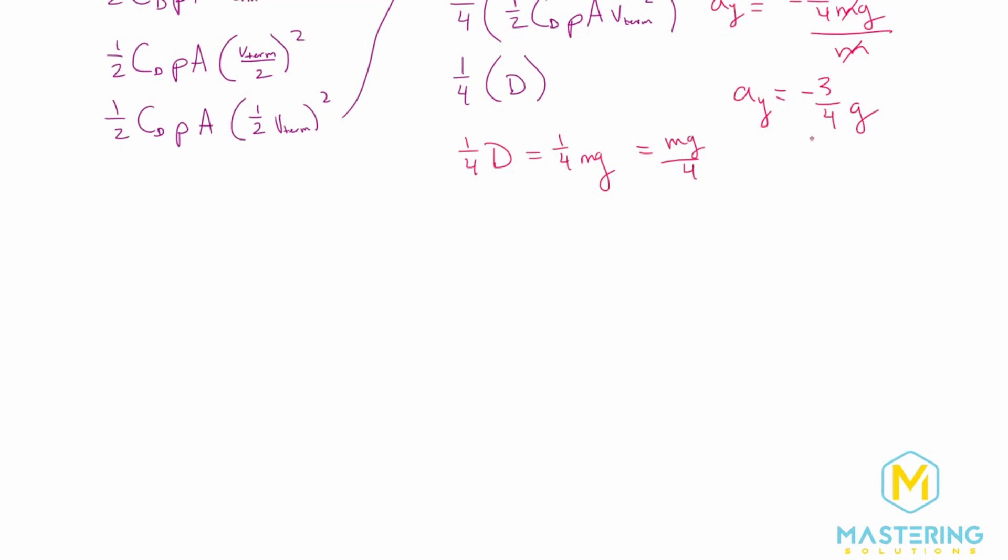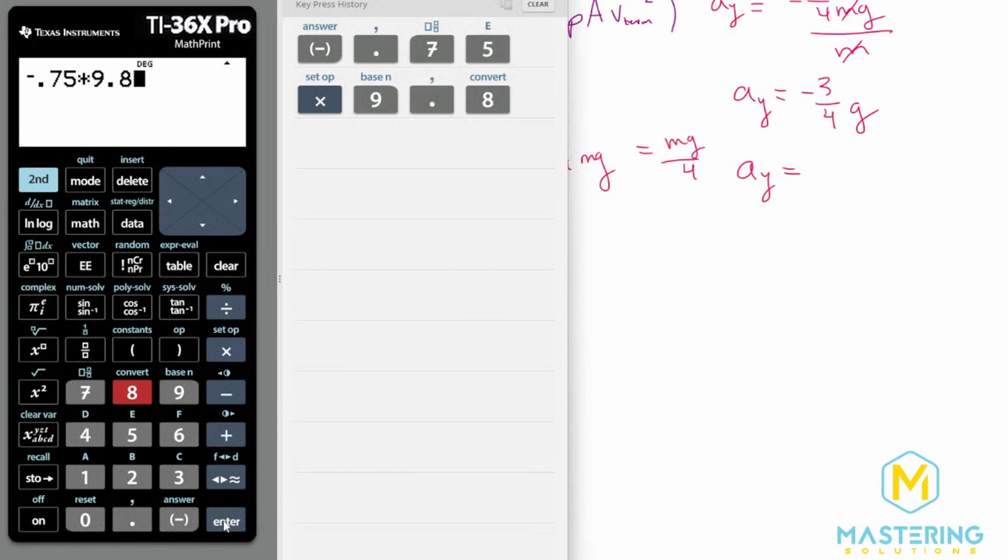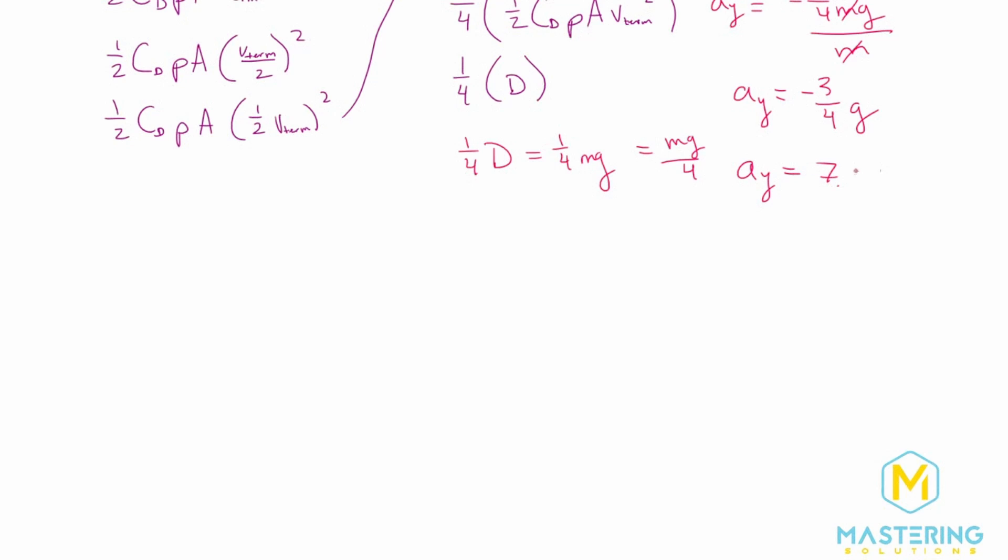So the acceleration of the diver at that instant when he's at one-half the terminal velocity does not depend on how much he weighs. It doesn't depend on all this other stuff. Acceleration in the y direction is equal to negative 0.75 times 9.8 meters per second squared. So we have the acceleration is a negative 7.35.